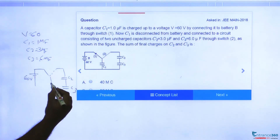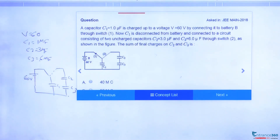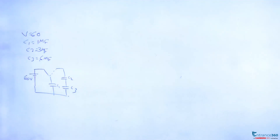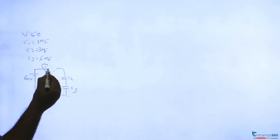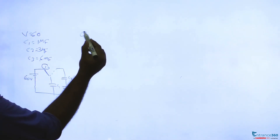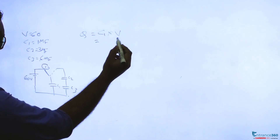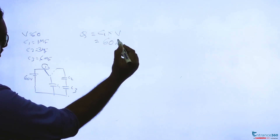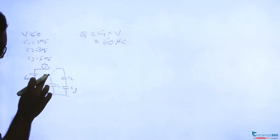We can use the concept of common potential to solve this. In Case 1, the switch is at 0.1, so capacitance C1 is charged to a charge of C1 into V, where C1 is 1 microfarad and voltage is 60 volt — so the initial charge is 60 microcoulombs.